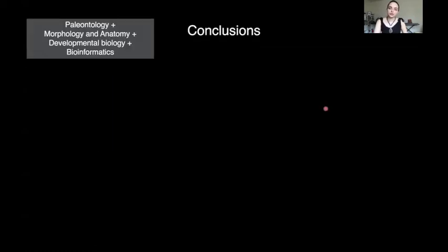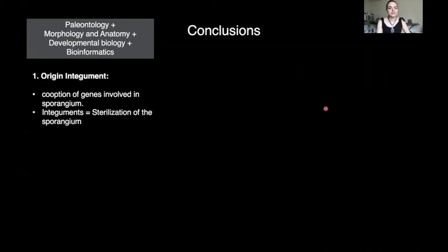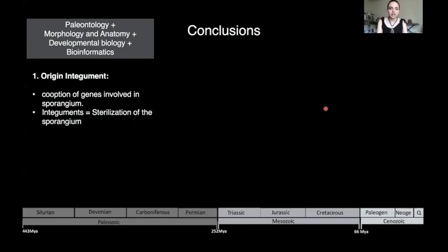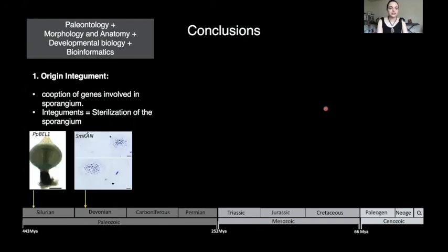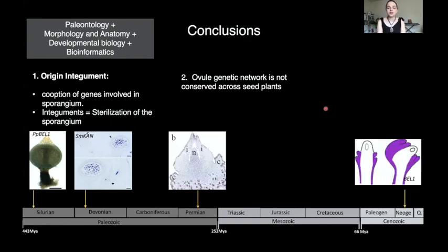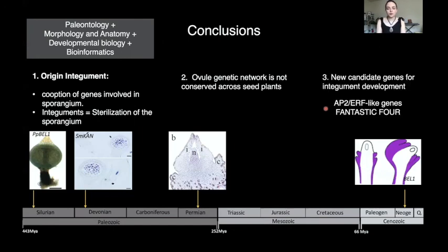We have three major conclusions achieved through the combination of paleontology, morphoanatomy, developmental biology, and bioinformatics. First, the origin of the integument in seed plants may have been the result of co-option of genes involved in sporangia development or the result of sterilization of sporangia — these hypotheses are not mutually exclusive, but this must have happened much earlier in evolutionary time, as these genes function in sporangia development in mosses, lycophytes, and ferns. Second, the ovule genetic network is not conserved across seed plants, as we see major differences between gymnosperms and angiosperms. Third, we have made major breakthroughs in identifying new candidate genes for integument development in gymnosperms, like members of the AP2/ERF and Fantastic Four protein families.